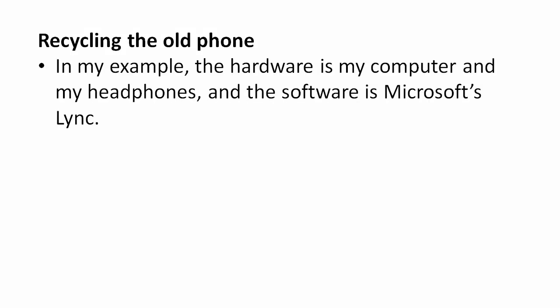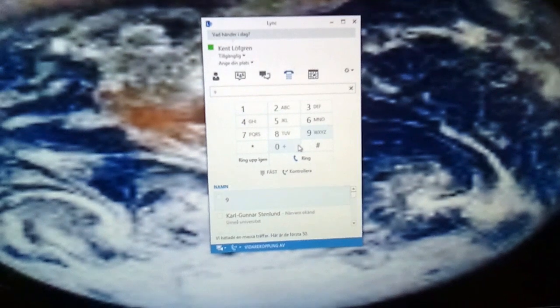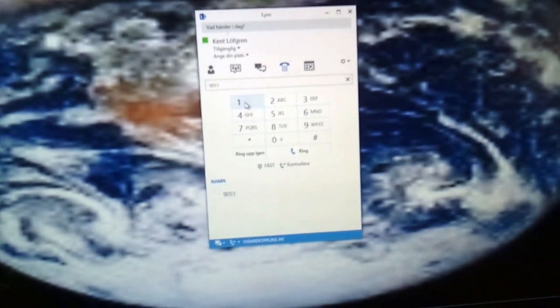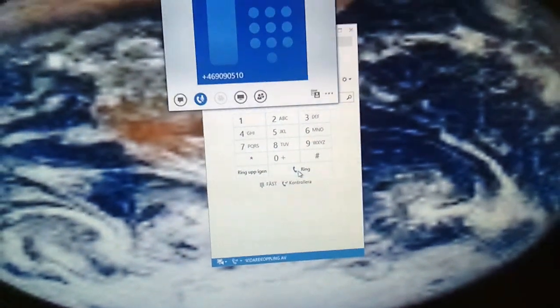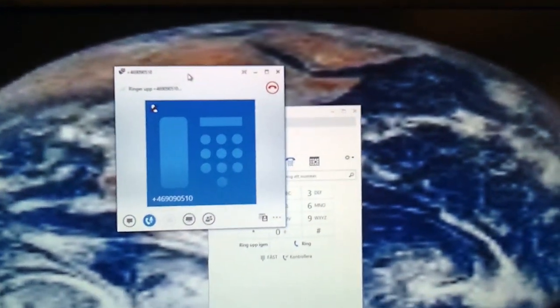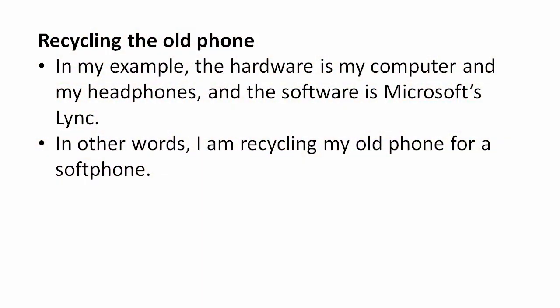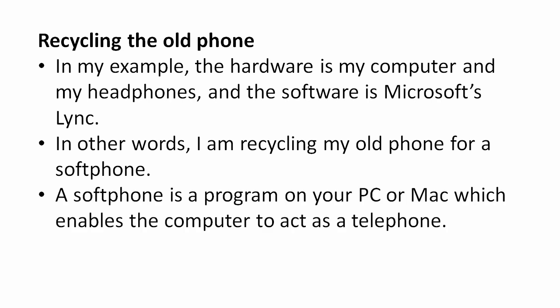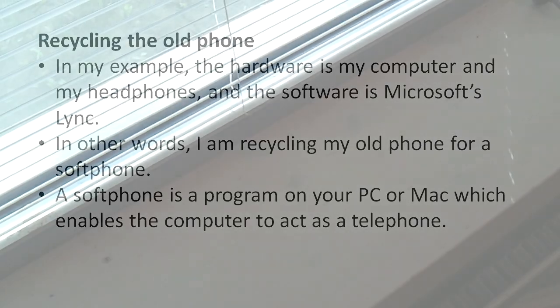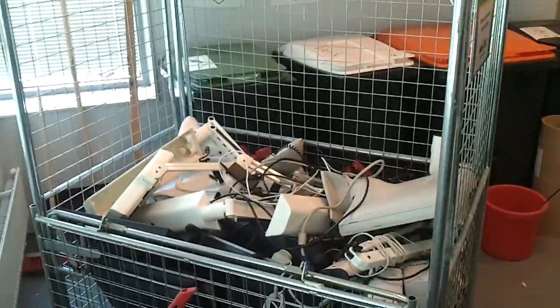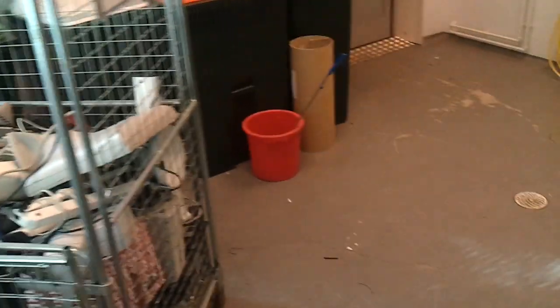In my example, the hardware is my computer and the headphones, and the software is Microsoft Lync, which is a fairly common program for business phone solutions. It's not the only way of using IP telephony, but this type of soft phone is the business solution my employer has chosen. A soft phone is software that you install on your PC or Mac to enable your computer to act as a telephone. It's becoming increasingly more common that businesses are using VoIP systems, and we are currently witnessing the end of an era.